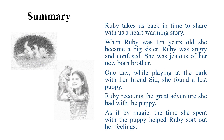Summary: Ruby takes us back in time to share with us a heartwarming story. When she was ten years old, she became a big sister. Ruby was angry and confused, and she was jealous of her newborn brother. One day, while playing in the park with her friend Sid, she found a lost puppy. Ruby recounts the great adventure she had with the puppy. As if by magic, the time she had spent with the puppy helped Ruby sort out her feelings.